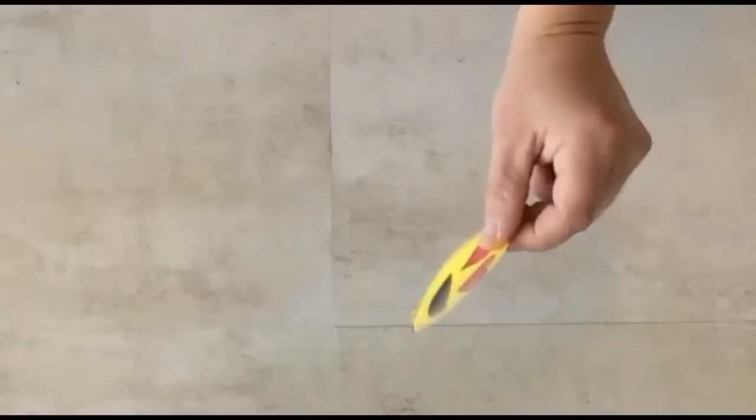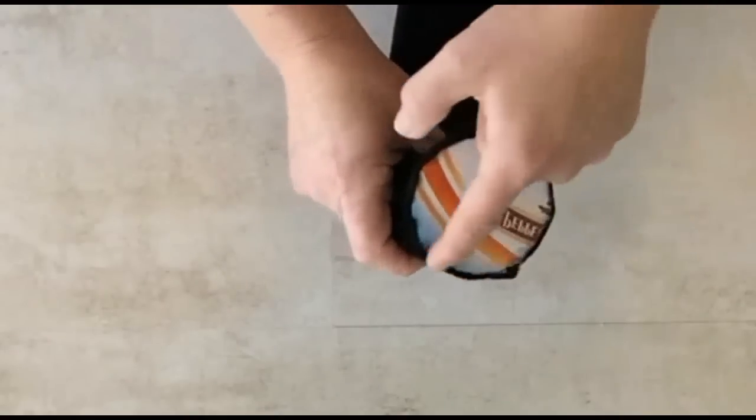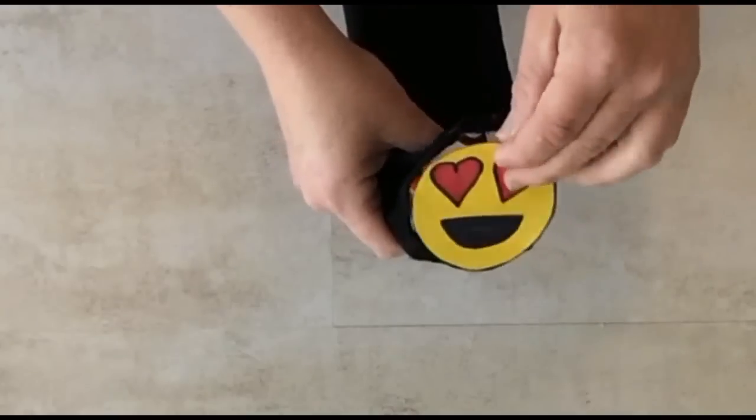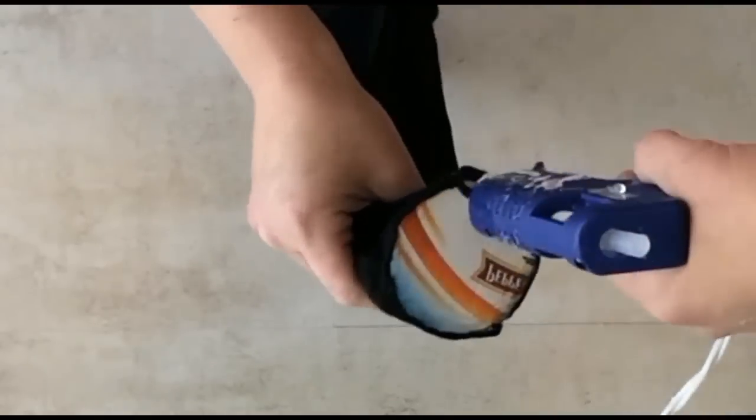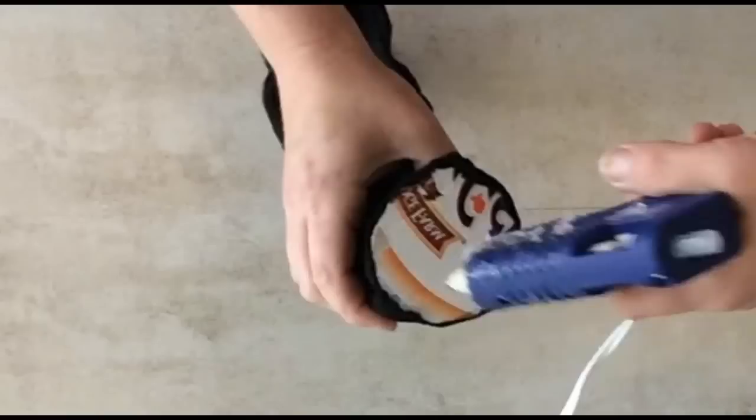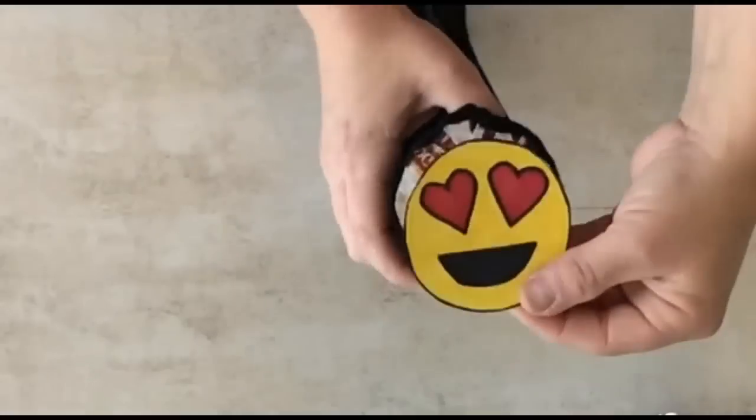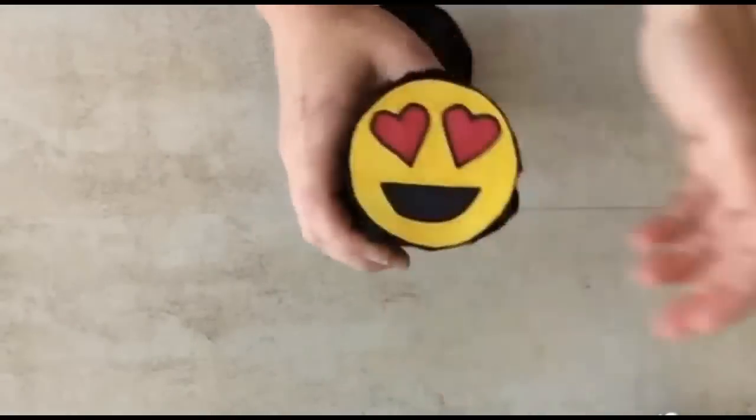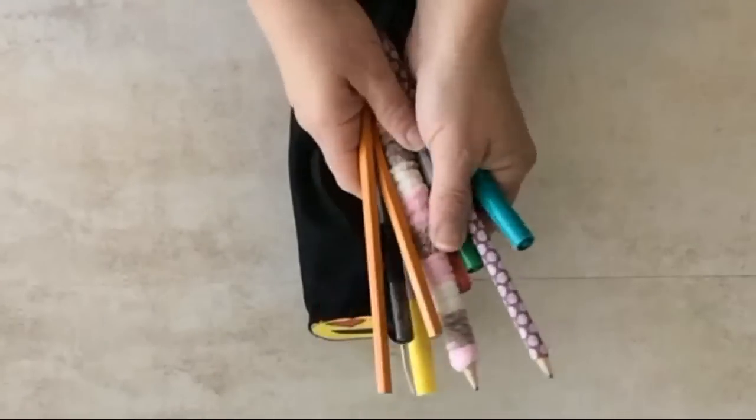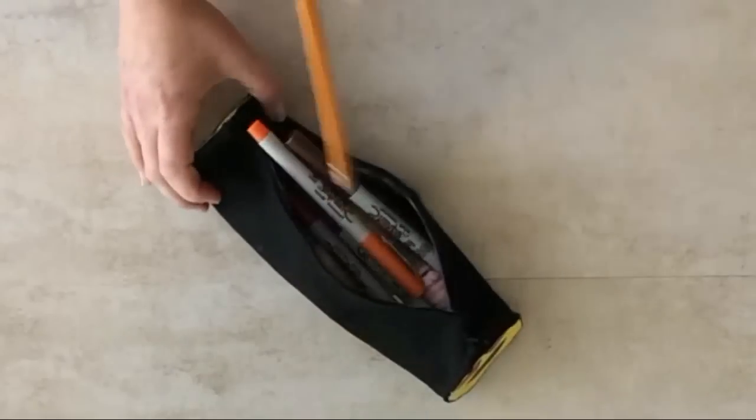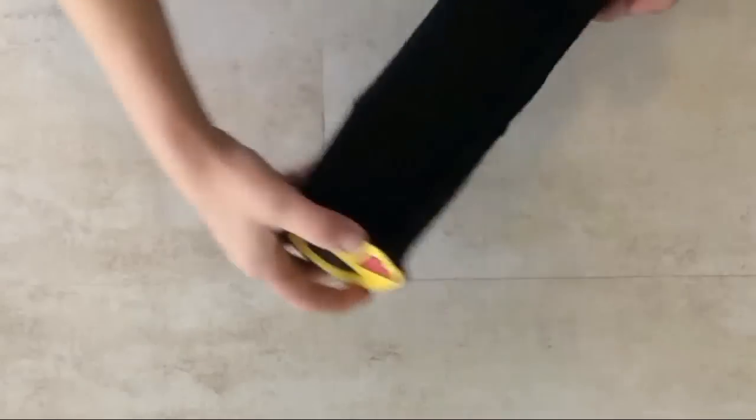Next, with each of your emojis, you're going to glue them on each end of the pencil case onto the cardboard. Then you can just add your pencils and pens or whatever you'd like into your pencil case. Zip it up and you're done!